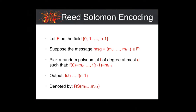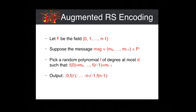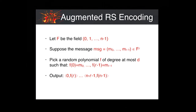We use a slight variation called augmented Reed-Solomon encoding, which is identical until we choose the polynomial f. But instead of just outputting f evaluated at L through N-1, we output the following blocks: the first block is the tuple (0, f(L)), the second block is (1, f(L+1)), and the last block is (N-L-1, f(N-1)). We simply append the position index of each block with the codeword.